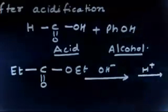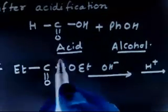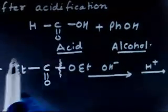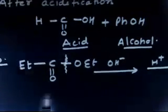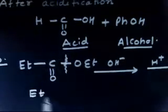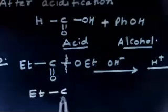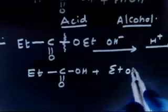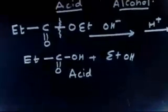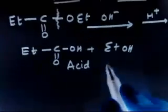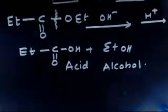So I do H⁺ — acidification. You have to break this bond again. This side will have acid and this side will have alcohol. So you will get the acid — EtCOOH — with OH, plus EtOH as the alcohol. You are getting one acid and another alcohol.